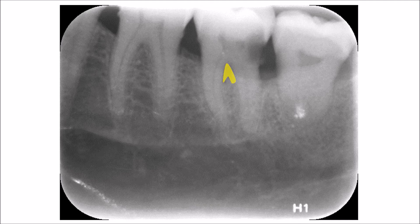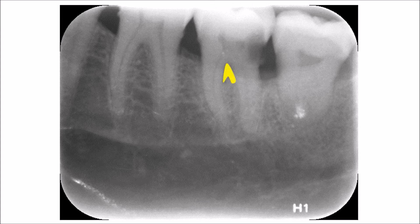You can also see calculus deposits on all surfaces — on the mesial and distal surfaces of the lower six, and the mesial and distal surfaces of the lower seven — as well as cemental caries on the lower seven.